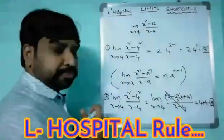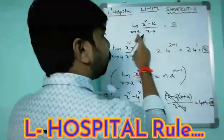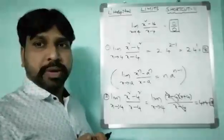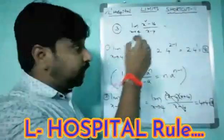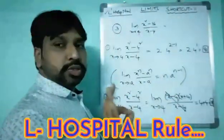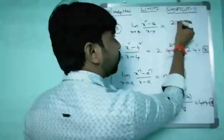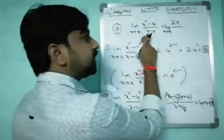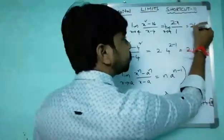First, substitute the x value in the given function: 4² - 16 = 0 in the numerator, and 4 - 4 = 0 in the denominator. Whenever we get 0/0, we apply L'Hospital's rule: take the derivative of the numerator separately and the derivative of the denominator separately. The derivative of x² is 2x, and the derivative of the constant is 0, over the derivative of x, which is 1.